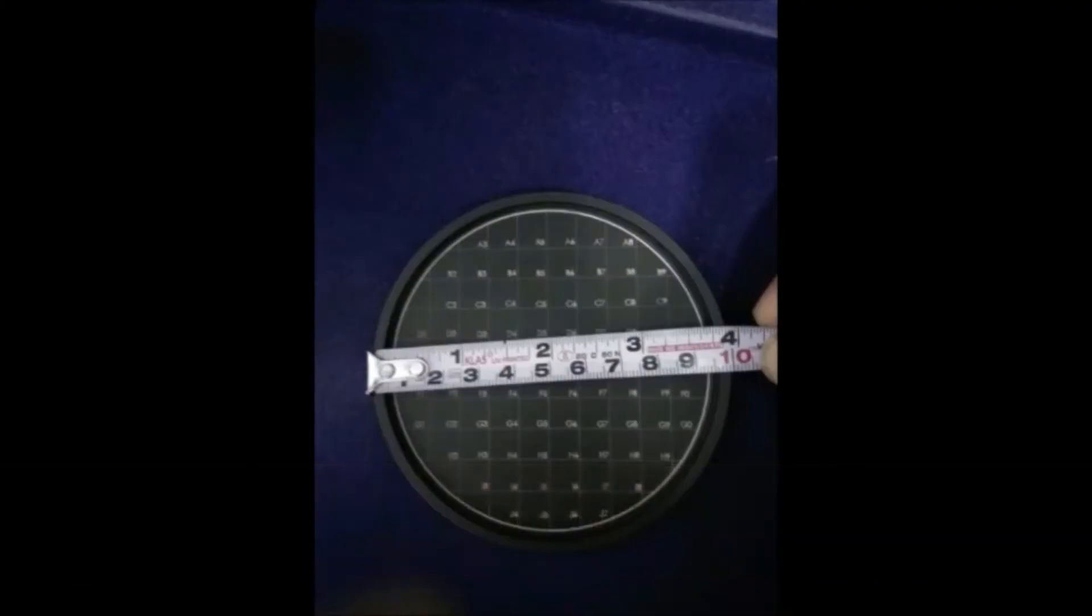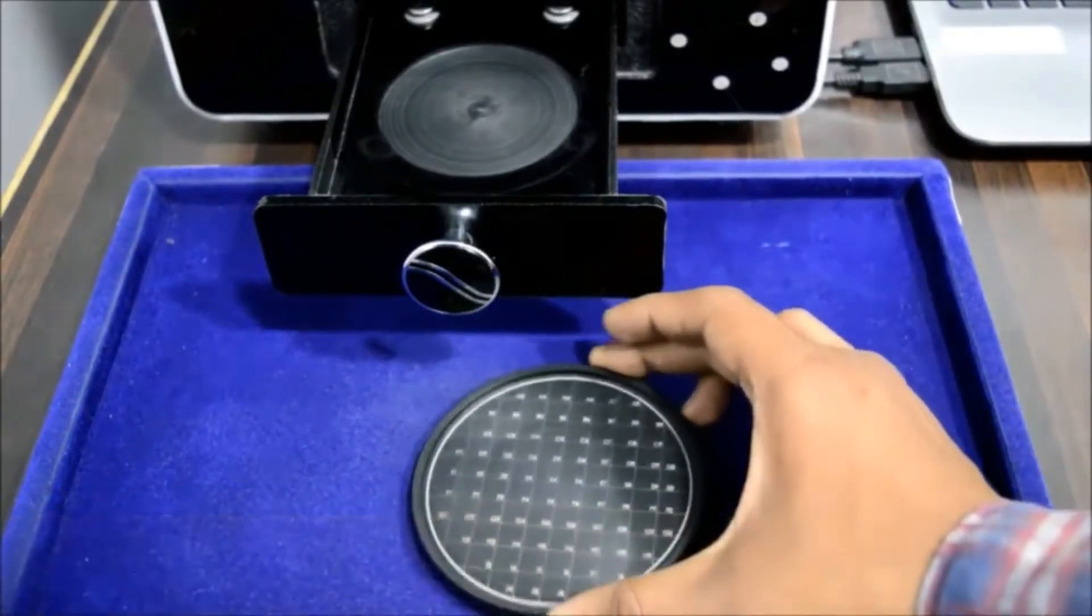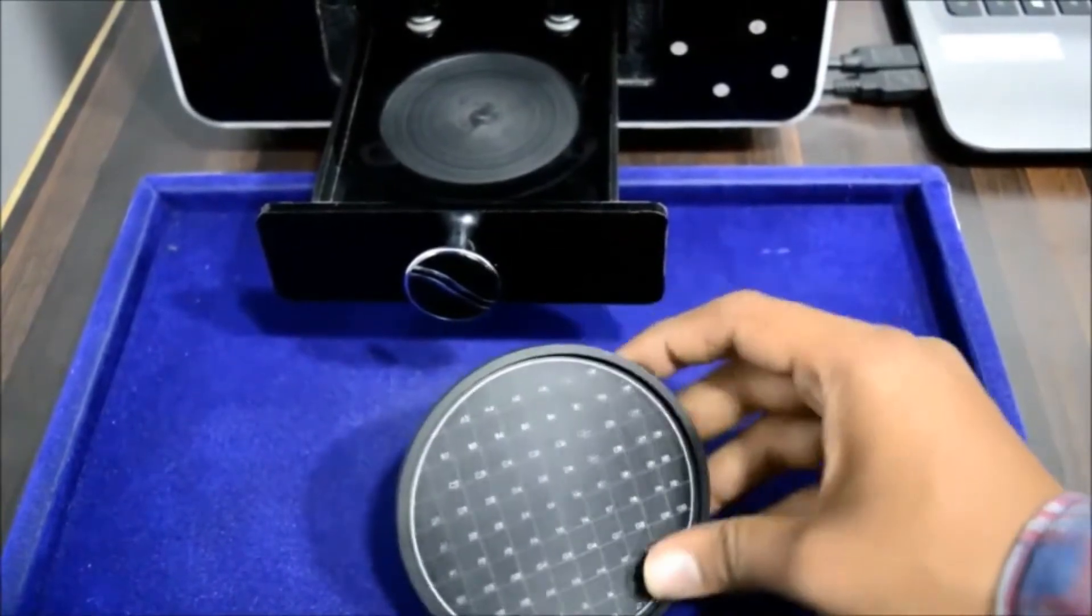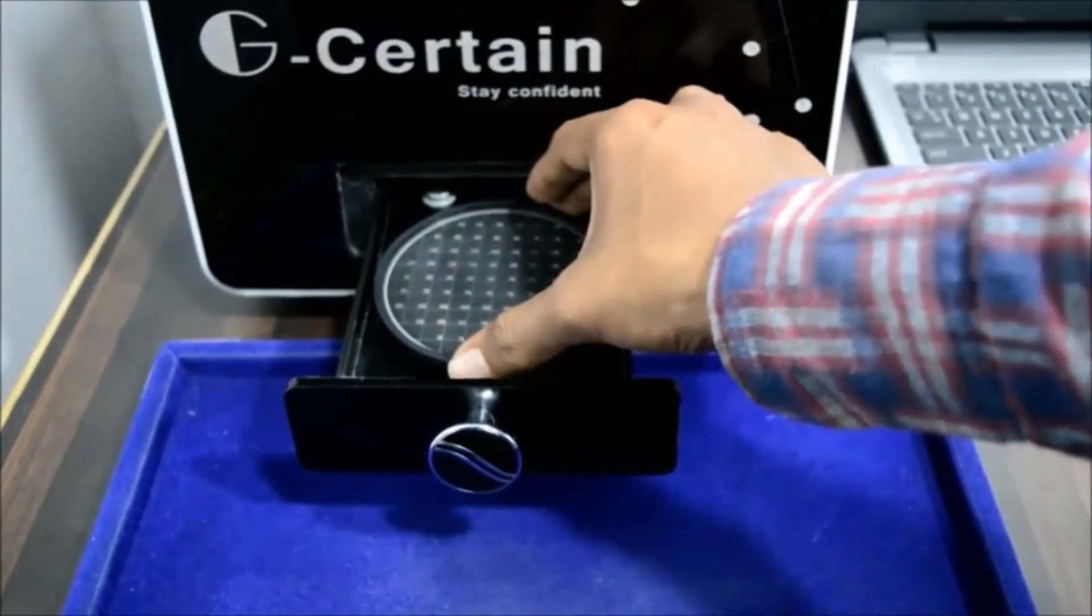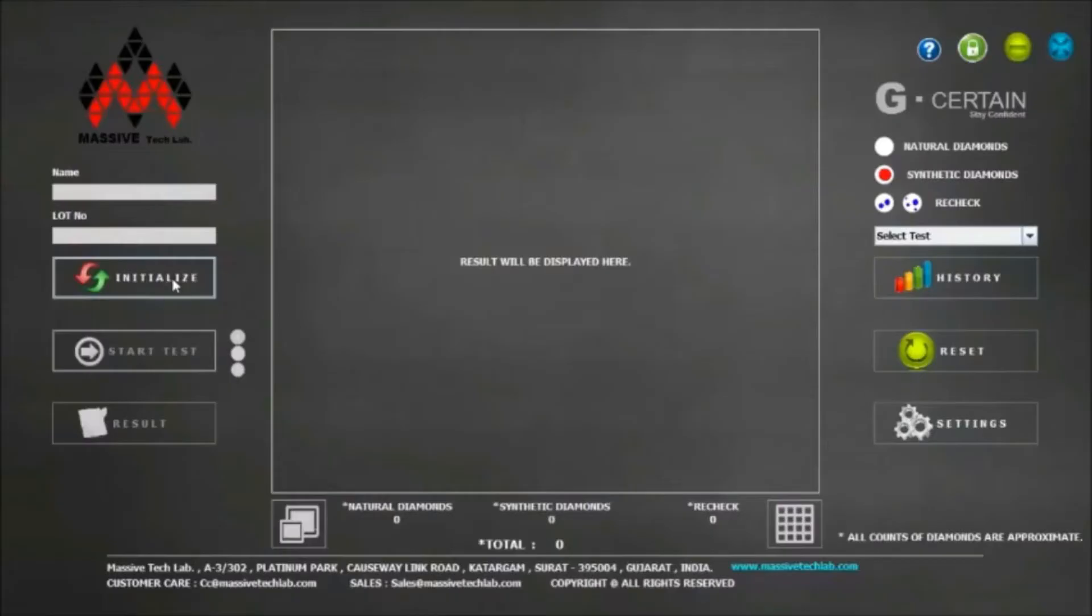Size of circular tray is 10 centimeter diameter. Circular tray can be inserted inside sliding tray after arranging diamonds on it. It has marking on it to easily separate diamonds after scanning. Now let us move to the software part. Click on initialize once after logging into software.